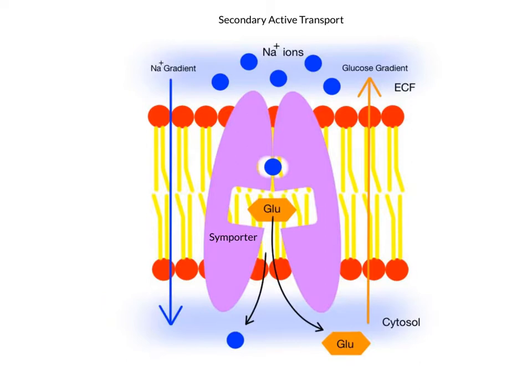This water can be released and its stored potential energy is then used to generate electricity. In a cell, the membrane is like the dam, and the sodium's stored potential energy is used to drive the transport of another solute uphill against its concentration gradient. The secondary active transport proteins are allowing sodium ions a way to get back into the cell, tapping into that high concentration of stored potential energy to drive the movement of another solute against its gradient.